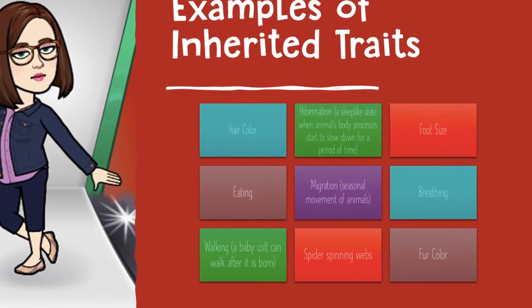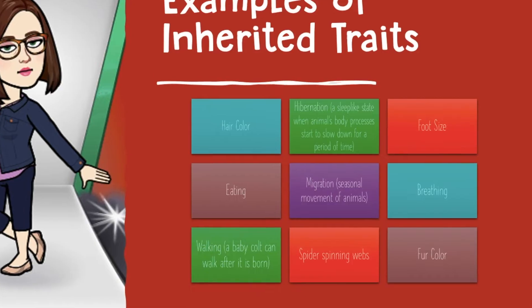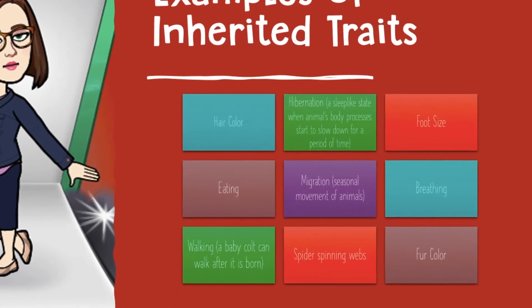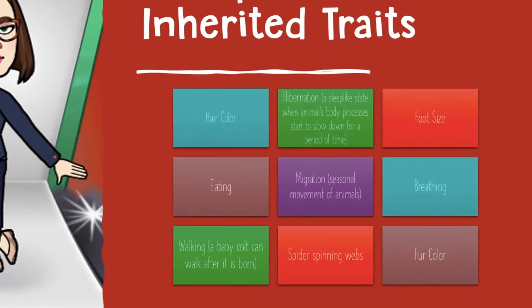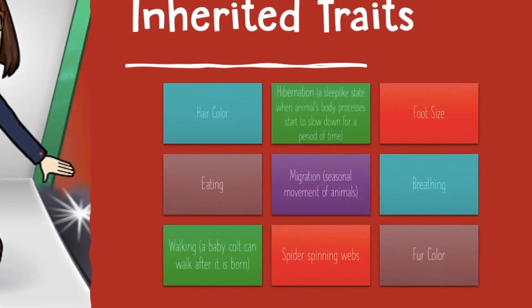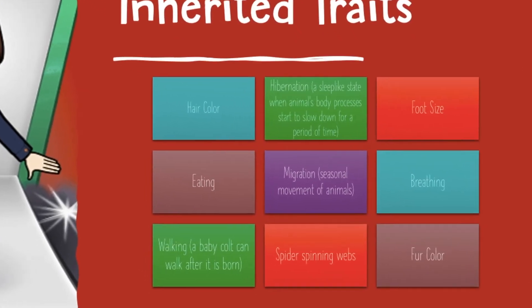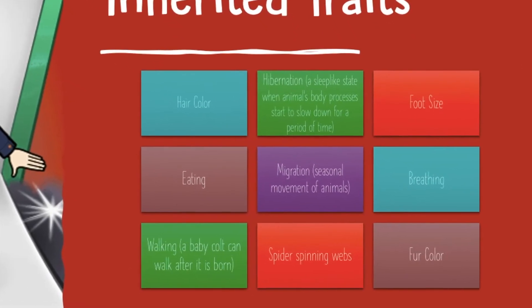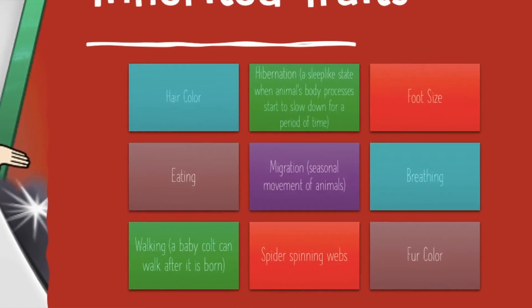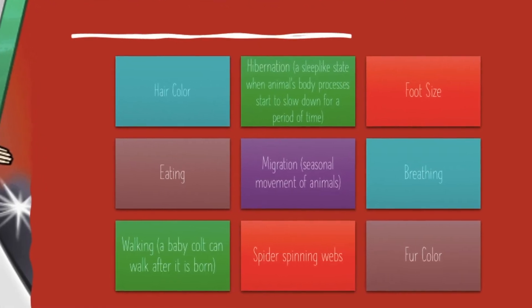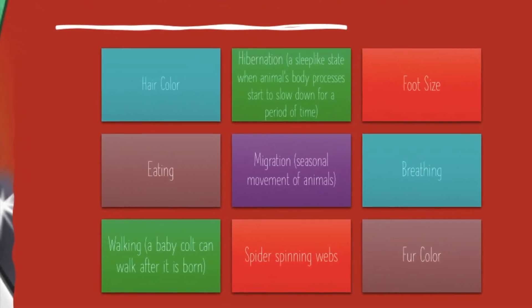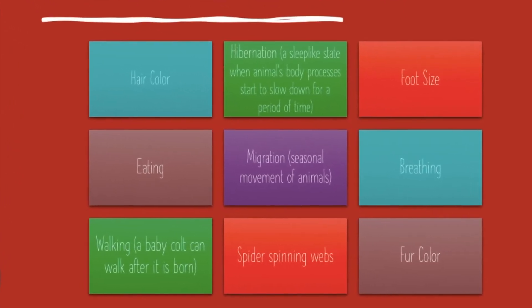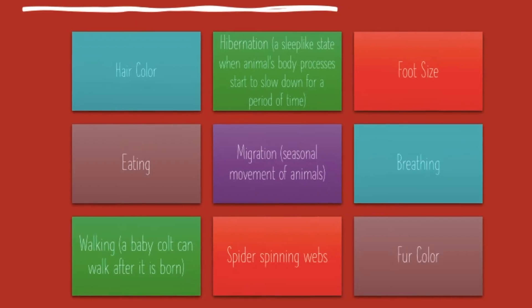Maybe not for humans, but a baby horse can walk after it's born — it doesn't need to be taught. And of course, spiders spinning webs, and your fur color, if you have fur.